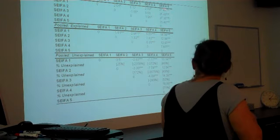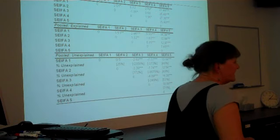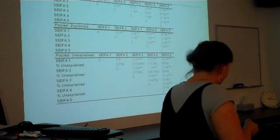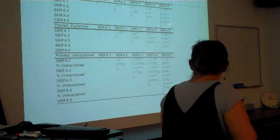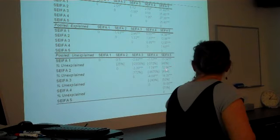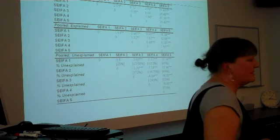Then we use the Oaxaca-Blinder approach to allocate this total change to either explained or unexplained variation. And what we find is, we can explain 14 days of this 27 days by the characteristics, the clinical characteristics of the individuals, but we have 13 days remaining. So, what we're finding is that a large percentage of the raw difference in waiting days at the mean is unexplained. 48% between 1 and 5. 49% between 2 and 5, 53%. And here, between 4 and 5, which are fairly close, we have actually 71% unexplained variation.